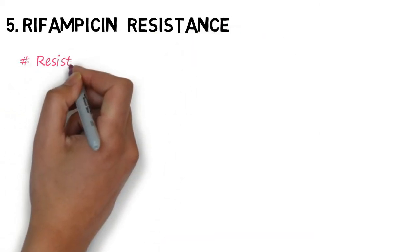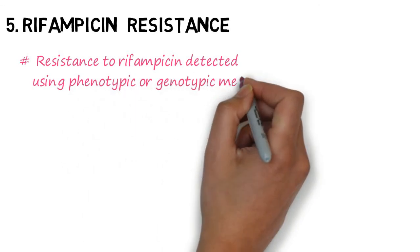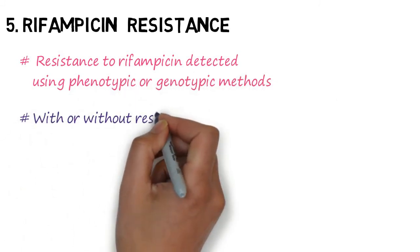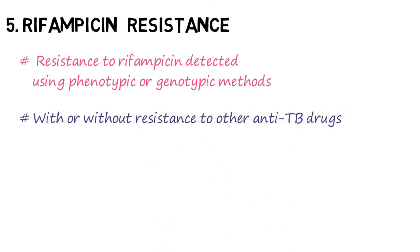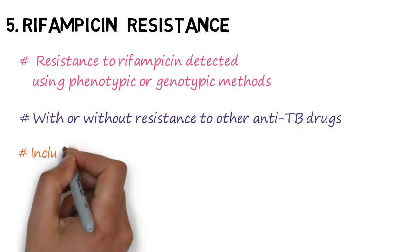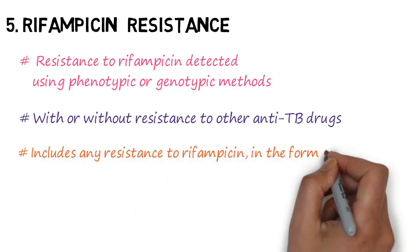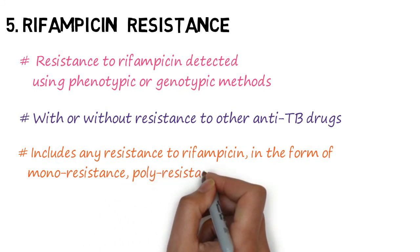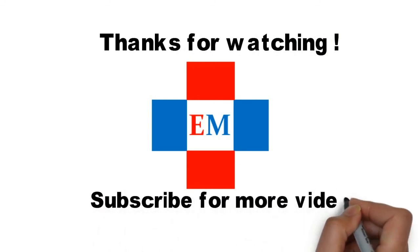Next is rifampicin resistance. In this, there is resistance to rifampicin detected using phenotypic or genotypic methods, and this can occur with or without resistance to other anti-TB drugs. It basically includes any resistance to rifampicin in the form of mono resistance, poly resistance, MDR, or XDR. Thanks for watching — subscribe for more videos.